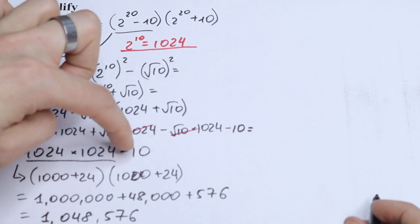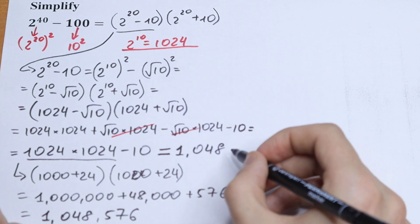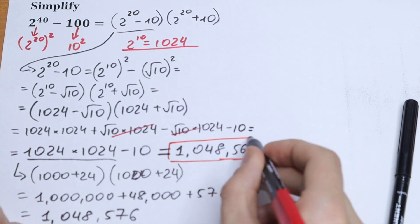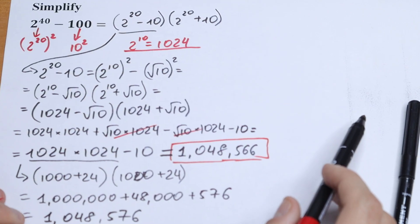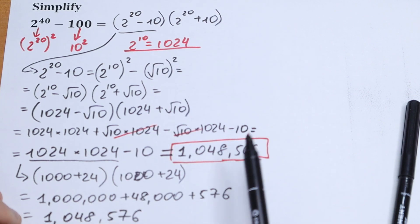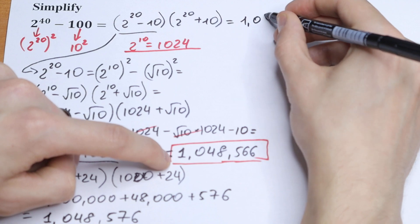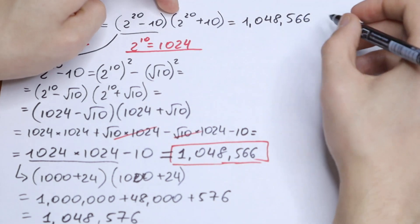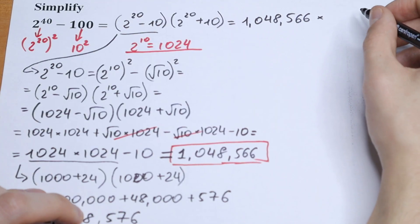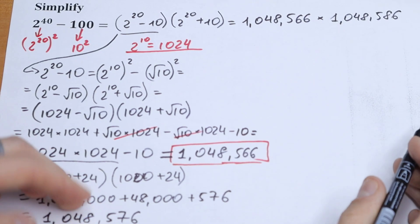So 1,048,566 is the value of our first parenthesis, (2 to the 20th power minus 10). It's easy to see that the second parenthesis, (2 to the 20th power plus 10), is just 20 more, so it equals 1,048,586. We now have the product of these two values.